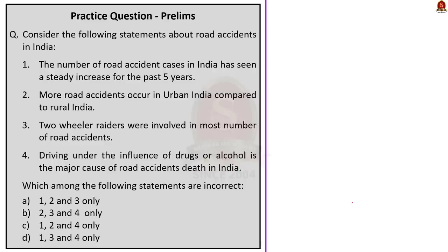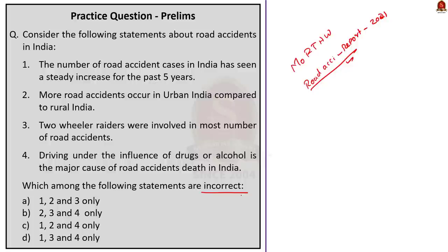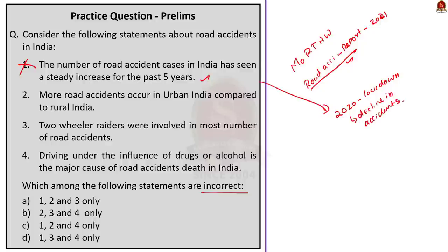Last year, the Ministry of Road Transport and Highways published the Road Accidents in India 2021 report, so we can expect a question about road accidents in the prelims examination. This question has four statements and asks which are incorrect. Statement one — the number of road accident cases has seen a steady increase for the past five years — is incorrect, as there was a dip in road accidents in 2020 due to the strict lockdown. Statement two — more road accidents occur in urban India compared to rural India — is also incorrect; according to the published report, more road accidents occur in rural India compared to urban India.